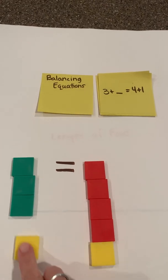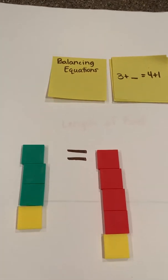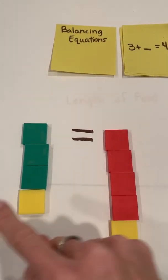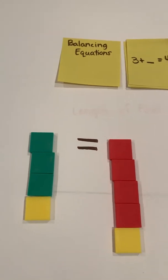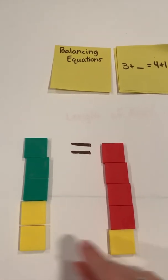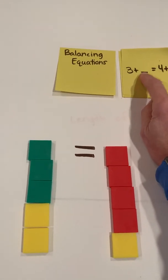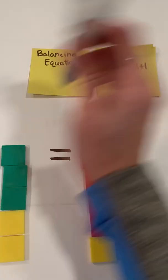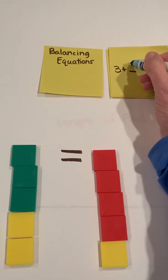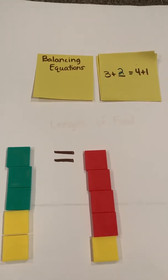So I've got 3. If I add 1 on, does that make it true yet? No, because that's 4 is the same as or equal to 5. That's not true. If I add on another, now that is equal. So then my missing addend would be 3 plus 2. I'd write a 2 in here. 3 plus 2 equals 4 plus 1.